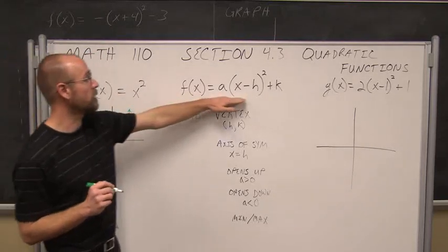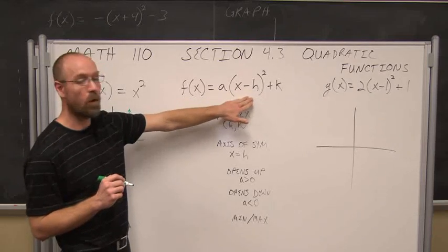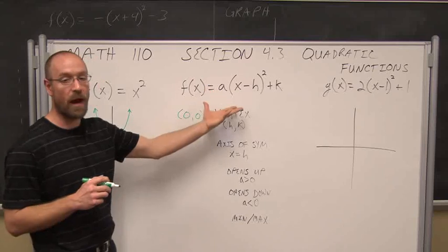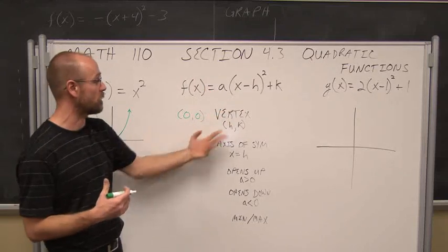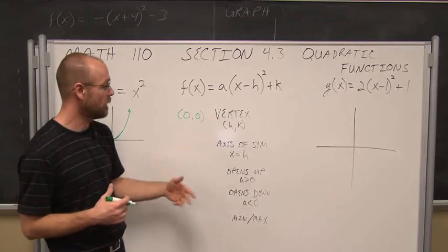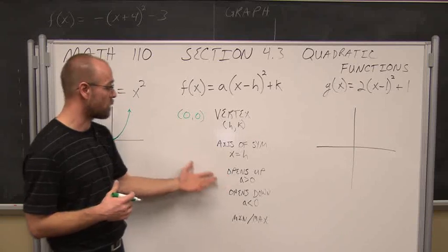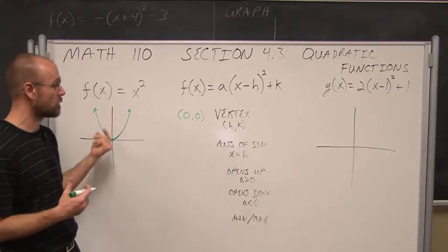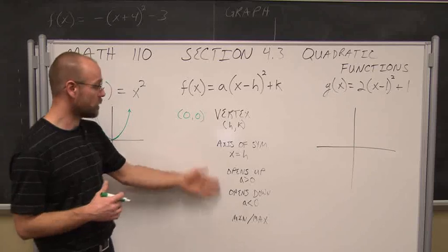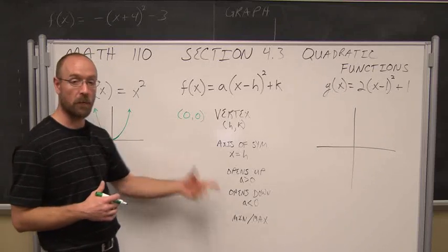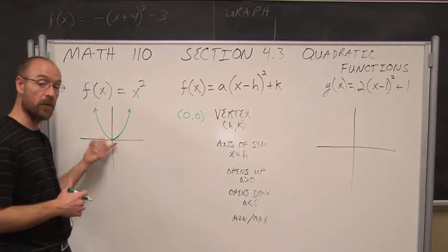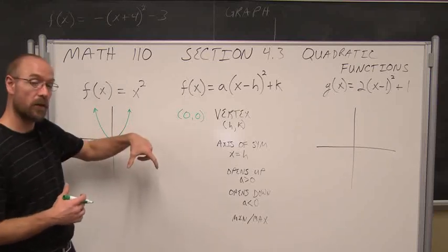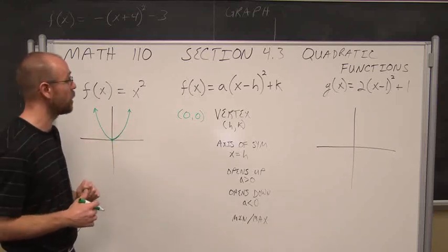This is written in standard form — a quadratic form that we like to write these in so that we can actually graph them and see all this information like the vertex, the axis of symmetry, and whether the function opens up or down. Here, our coefficient is 1, so it opens up. We can determine if it has a minimum or maximum: if it opens up, we have a minimum — a lowest point in y. And if it opens down, it has a maximum — its highest point.